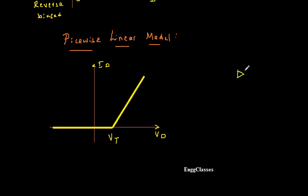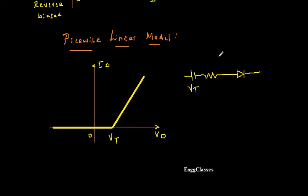This is the piecewise linear model. For the equivalent circuit: I include a diode, and since the diode does not conduct till Vt, that is indicated with the help of a battery voltage Vt. If the diode is made of silicon it is 0.7 V; if made of germanium it is 0.3 V. Once the diode starts conducting there is some dynamic resistance involved, and I include that dynamic resistance Rd in the circuit.